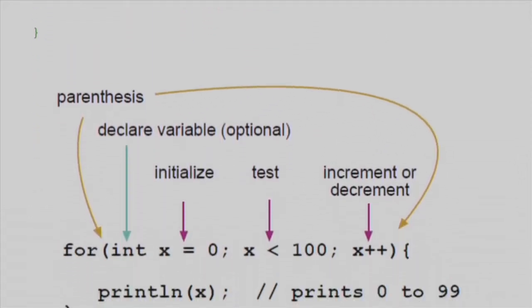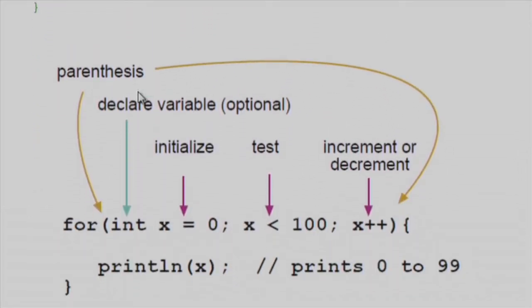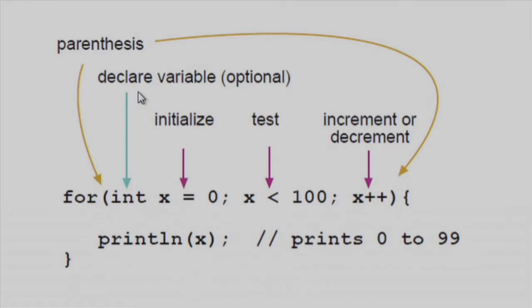Let's look at the following example. The index initialization happens first and exactly once. Each time through the loop, the condition is tested. If it is true, the statement block and increment are executed. Then the condition is tested again. When the loop condition becomes false, the loop ends.